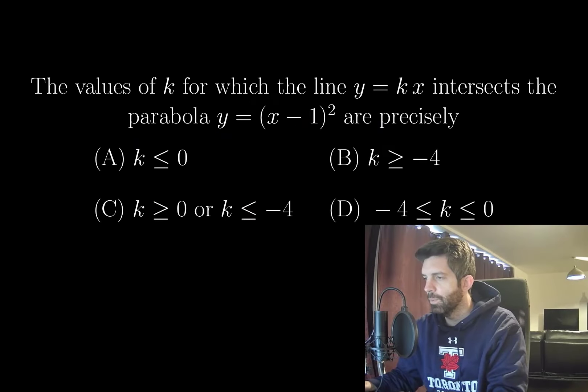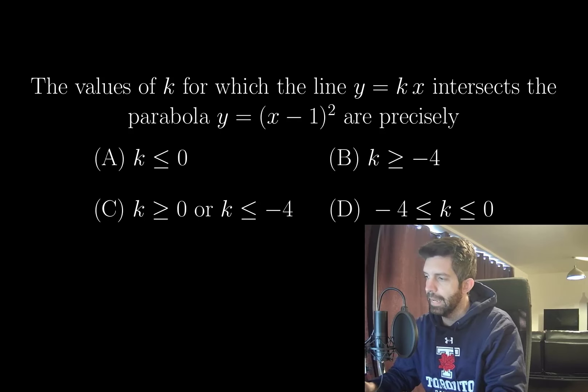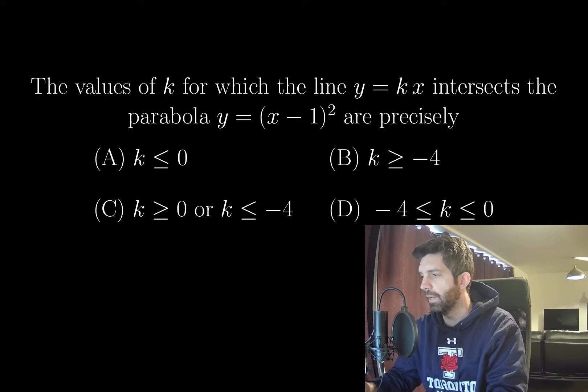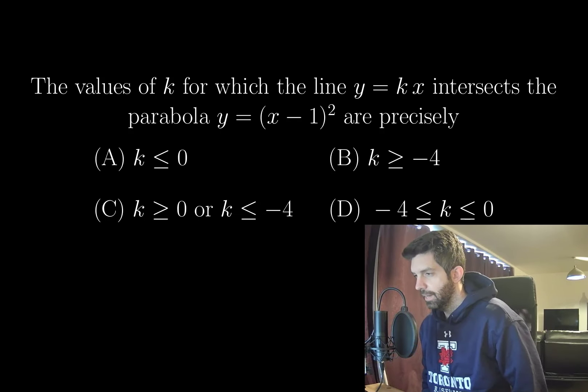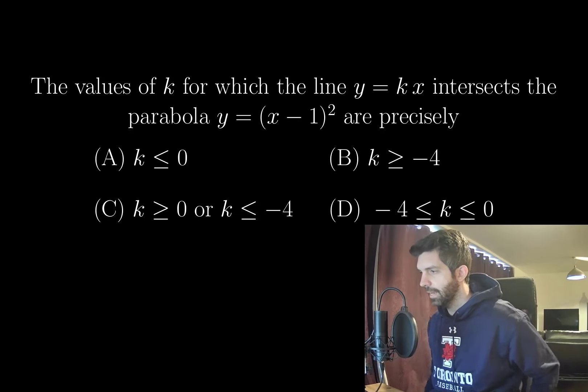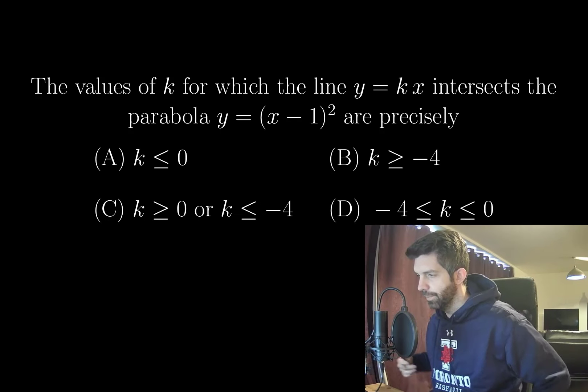The values of k for which the line y equals kx intersects the parabola y equals x minus 1 squared are precisely: (A) k less than or equal to 0, (B) k greater than or equal to negative 4, (C) k greater than or equal to 0 or less than or equal to negative 4, or (D) k between negative 4 and 0.